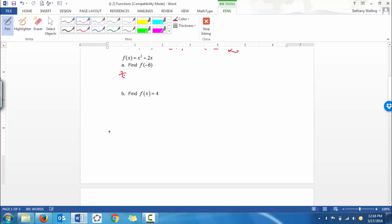This means that x is equal to negative 6. So everywhere we see an x, we're going to put in the negative 6. So negative 6 squared plus 2 times negative 6, which would be positive 36. 2 times negative 6 would be negative 12. So 36 minus 12 would give you 24.